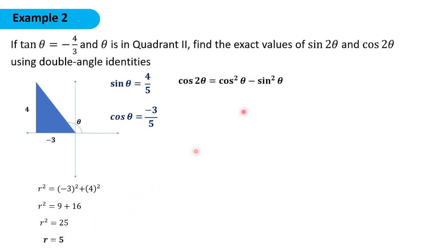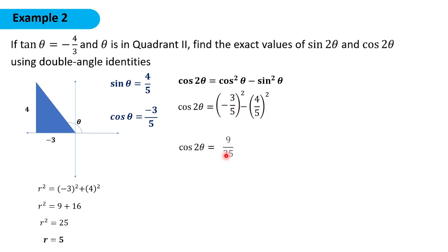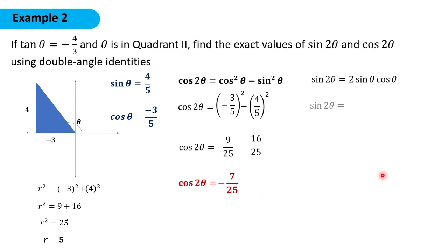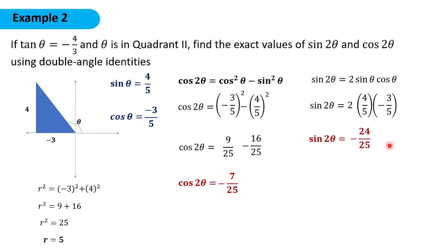Now let us get the value of cosine 2θ. Cosine θ is −3/5 and sine θ is 4/5. Squaring, we have 9/25 minus 16/25, giving us negative 7 over 25. For sine 2θ, we have 2 times sine θ (4/5) and cosine θ (−3/5). So we have 2 times 4 times negative 3, giving us negative 24, over 5 times 5 is 25. So sine 2θ is equal to negative 24 over 25.